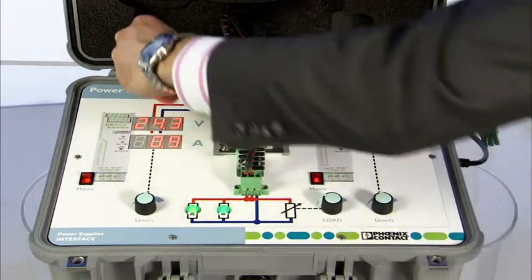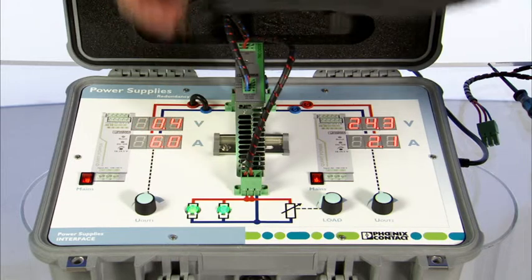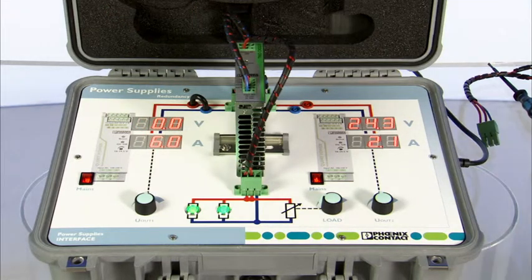If there is a short circuit in the supply line now, the load is still supplied. The diode module displays the loss of redundancy.